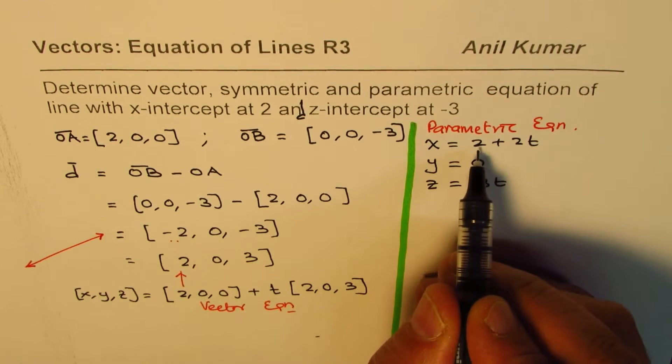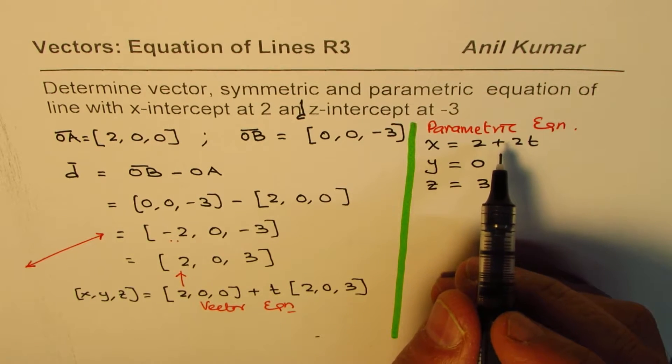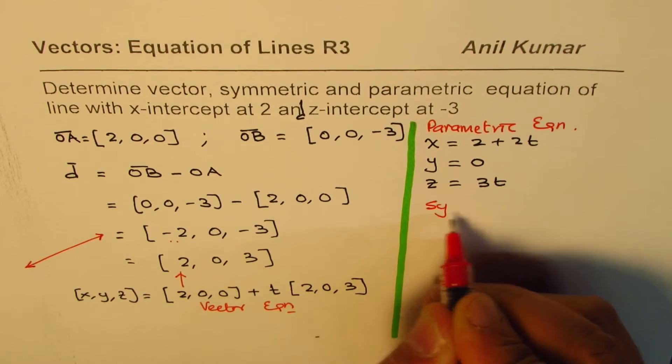we could write this as x minus 2 divided by 2. So, normally, when you want to write the symmetric equation, let me write down, symmetric equation.